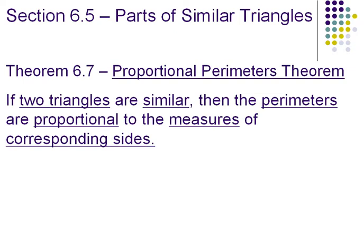Let's look at this theorem, 6.7, the proportional perimeters theorem. It says if two triangles are similar, then the perimeters are proportional to the measures of corresponding sides.